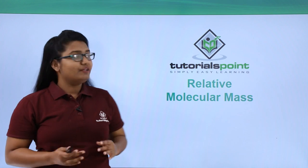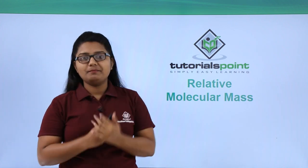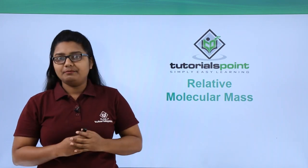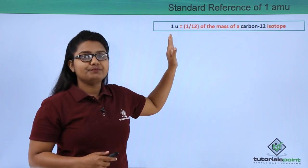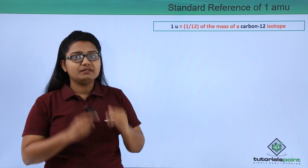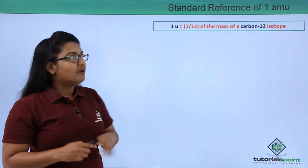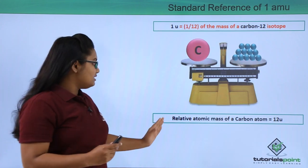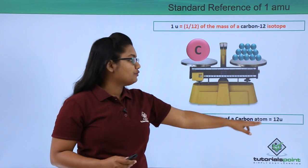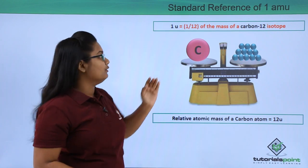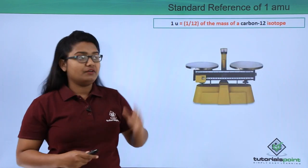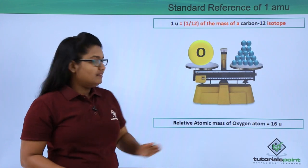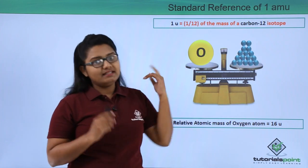In this video we will be discussing relative molecular mass. We have already learned about the relative atomic masses of atoms of different elements, where we used the standard unit 1u, whose value was taken to be one twelfth of the mass of a carbon-12 isotope. This means a carbon atom weighs 12u, and the relative atomic mass of an oxygen atom is 16u.